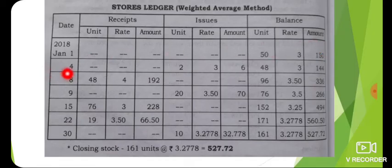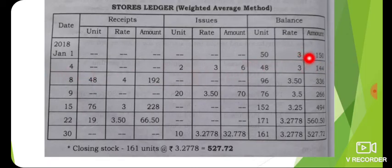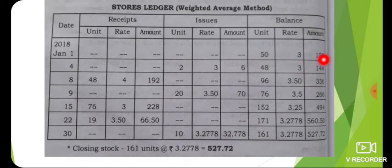January 1st: Opening Balance — 50 units at rate 3.50. On the 4th: 8 units. On the 9th: 9 units. On the 10th: 10 units. Values: 2, 3, 6, 2 — totaling 48, 106, 144. Balance: 144, 48, 3, 22.